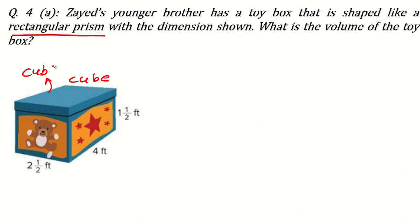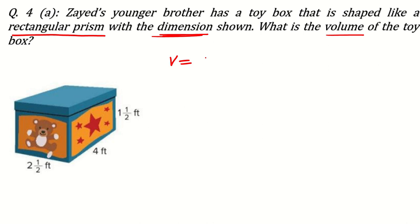The question here: Zayat's younger brother has a toy box that is shaped like a rectangular prism with the dimensions shown. Dimension means sides. What is the volume of the toy box? The volume of a rectangular prism is length multiplied by width multiplied by height.